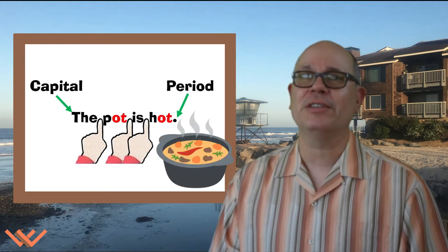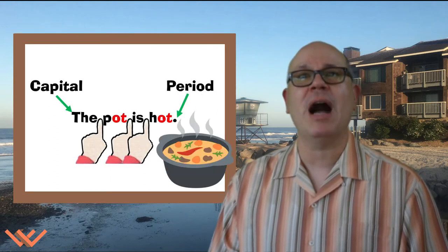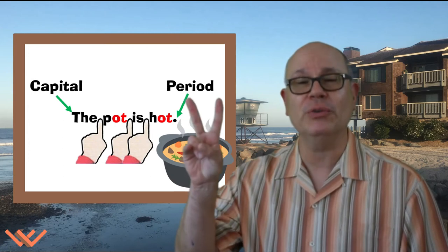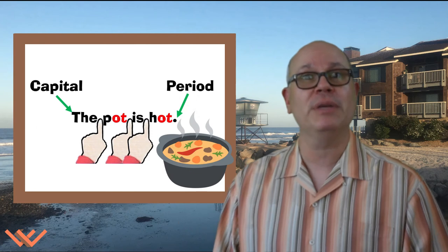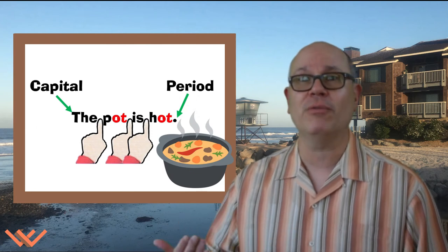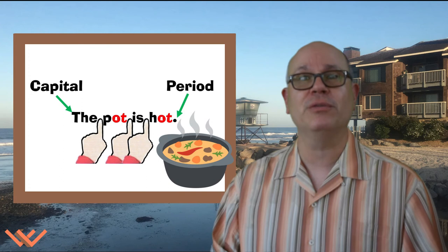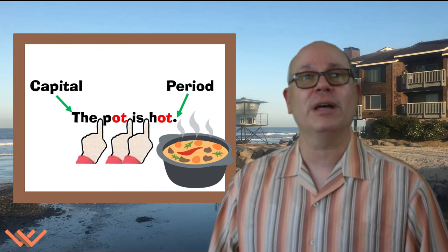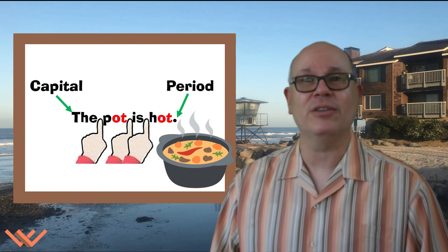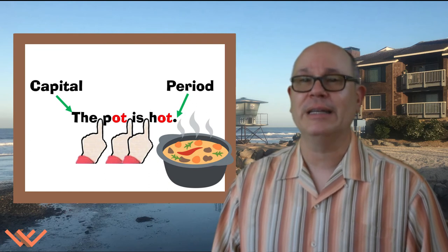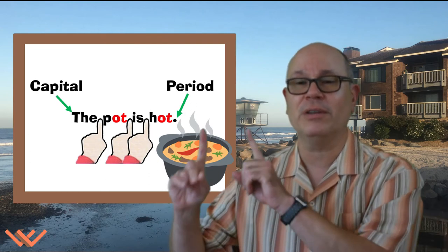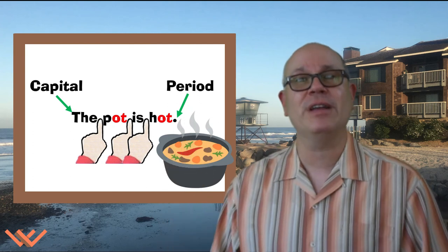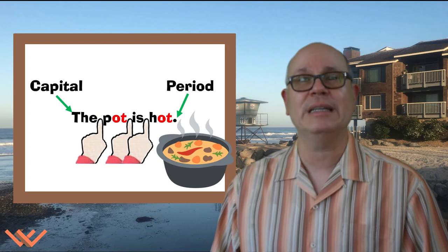Then the third sentence is, The pot is hot. It's kind of short, but we're using two aht words, or it could have been two and words, or two et words. It's up to you to write the right sentence for you. So, we start with a capital and end with a period. And in between words, you see all the fingers up there? That means that we have finger spaces in between each word.